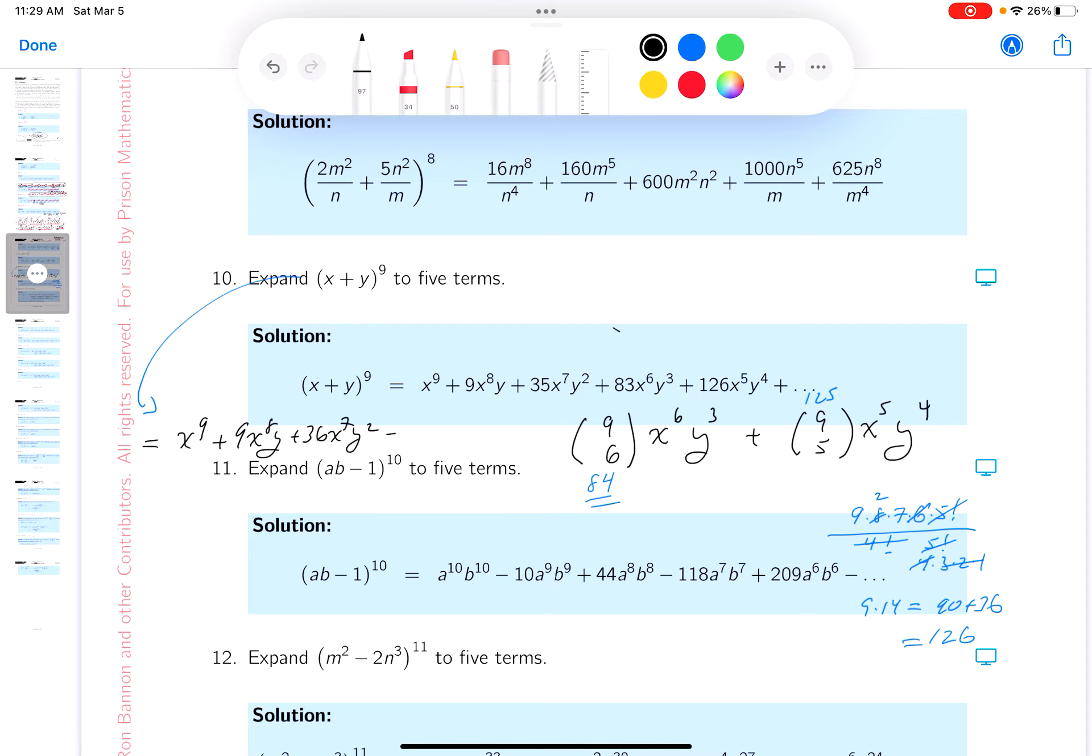What's the next one going to be? Okay, plus 84 x to the 6 y cubed. Let me erase that guy. I'm done with that. I'll erase all this chicken scratch over here, too. And, oh, that's 125. I shouldn't erase that. So plus 125. Did I say 125? Let me go for that again. Again, 9 times 8 times 7 times 6 times 5 factorial. 5 factorial. I think I just copied the wrong number. 4 factorial is 4 times 3 times 2 times 1. This cancels. That cancels. That's a 2. And it's 9 times 14, which is 90 and 36. I'm sorry, 126.